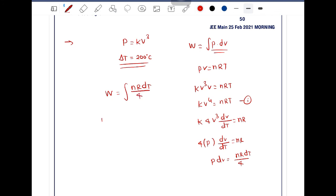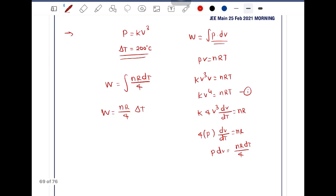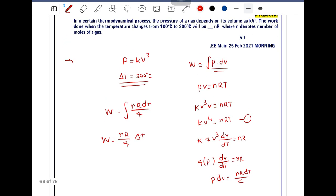W = (nR/4) × ΔT. ΔT is given as 200°C, so work = (nR/4) × 200 = 50nR. If we compare with the given data nR, the value of the coefficient is 50. So the answer is 50.